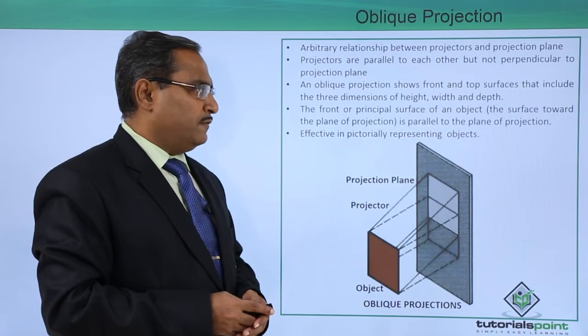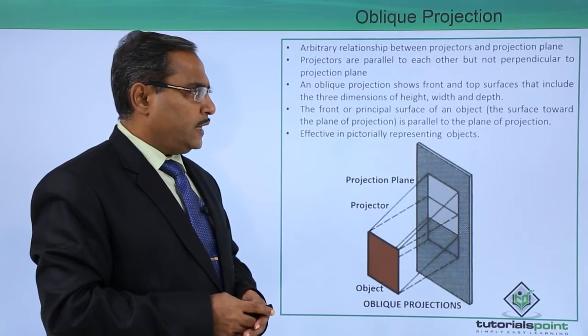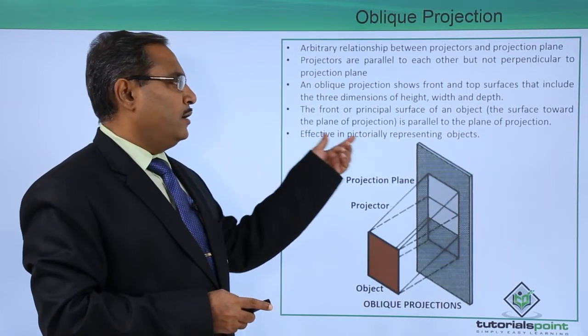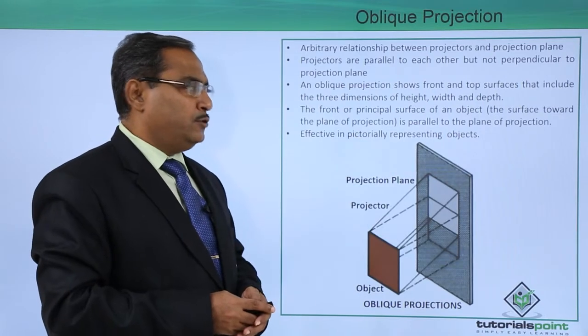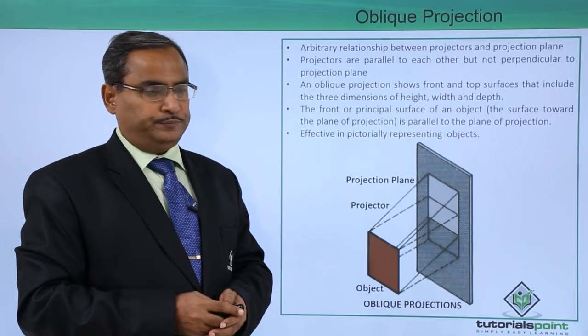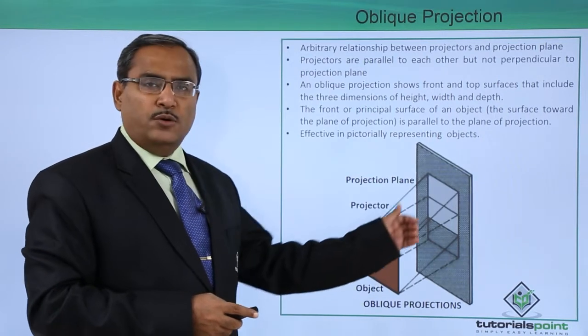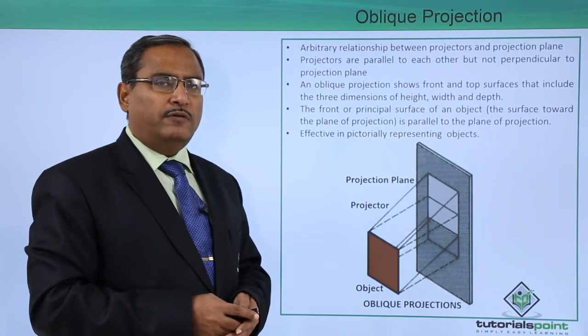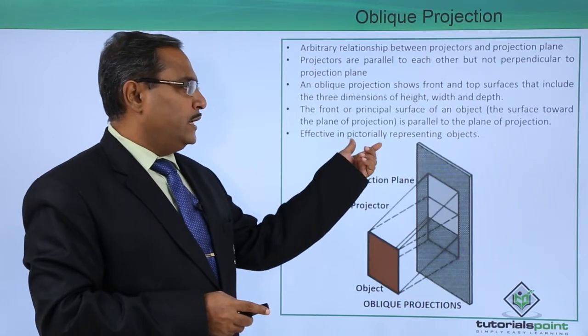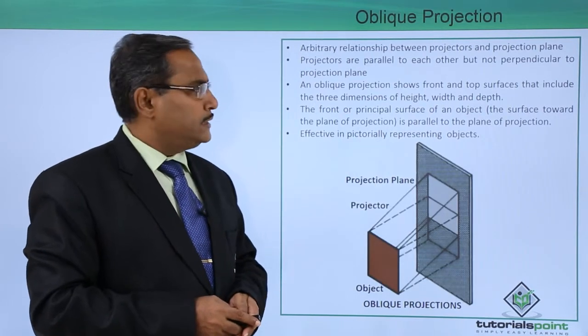The front or principal surface of an object, the surface toward the plane of projection, is parallel to the plane of projection. Here the object's principal surface will be parallel to the plane of projection. Effective in pictorially representing objects.